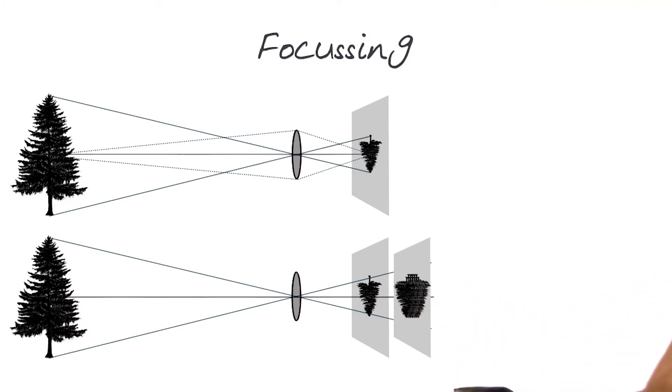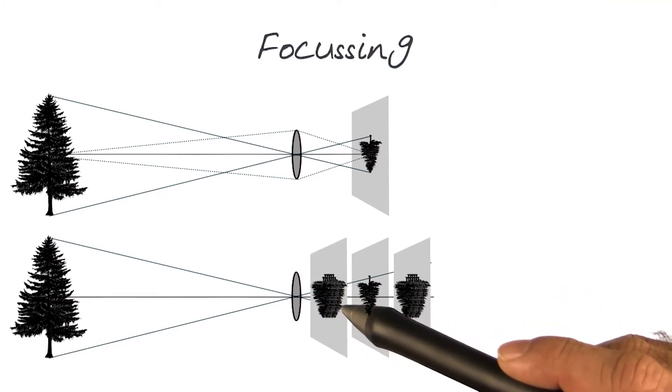I'm just simulating that here. Similarly, if I move the image plane in front of the focal plane, I should also get a blurry image.